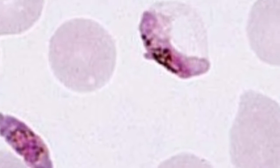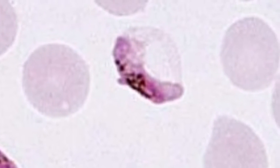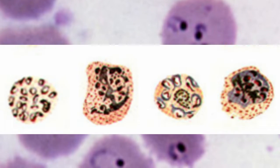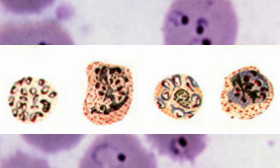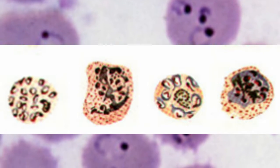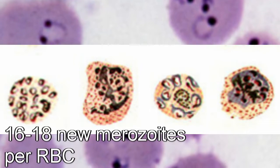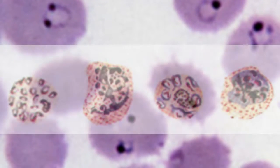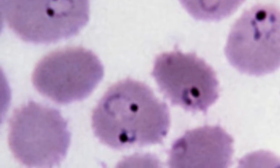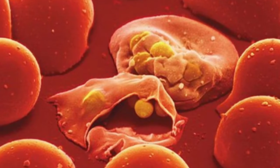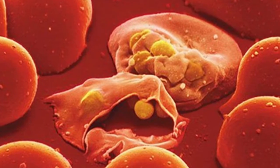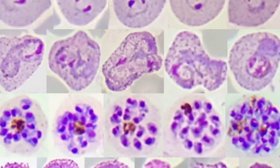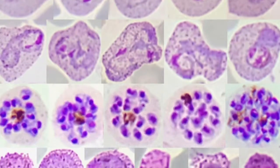The merozoites will find and attach to their own red blood cell, where they will form a distinctive ring structure. The protist will once again divide its nuclei, but unlike the liver stage, each cell will only produce 16 to 18 nuclei. Then at once, every merozoite from the liver that has infected a red blood cell will burst its host cell and release brand new merozoites. From there, the cycle continues: infection, replication, and destruction.